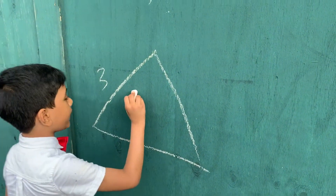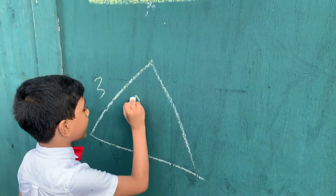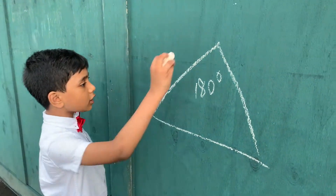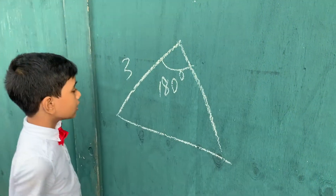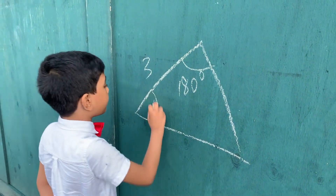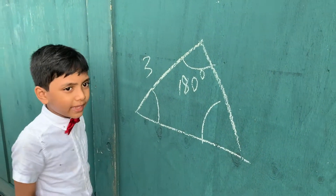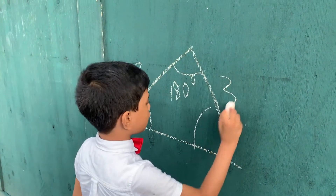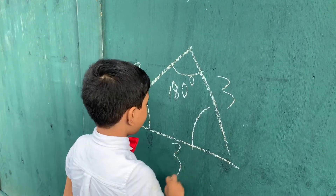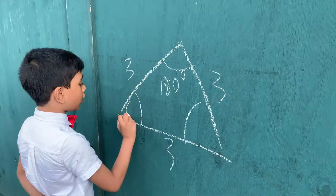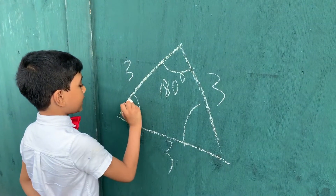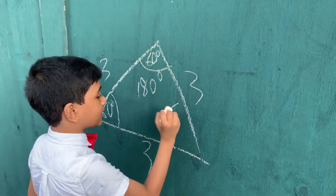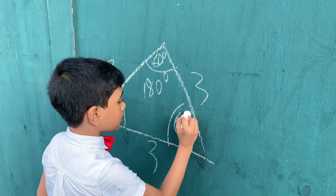The answer is 180 degrees, as with all triangles. Since you can rotate it diagonally and all the sides are congruent, that means all of the angles are the same. So we split it into thirds: 60 degrees, 60 degrees, 60 degrees.